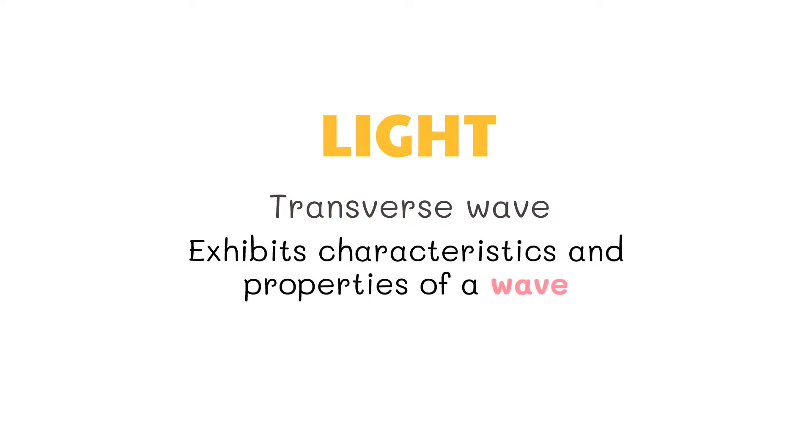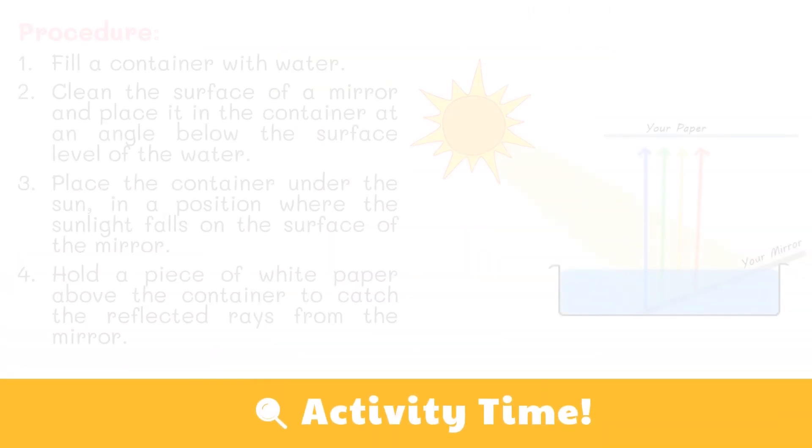We have learned previously that light is an example of a transverse wave. Thus it exhibits characteristics and properties of a wave. Specifically, it is classified as an electromagnetic wave. Let's get started with this activity.